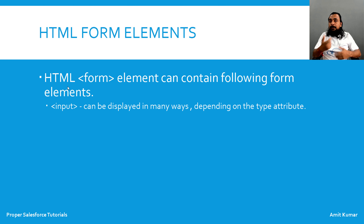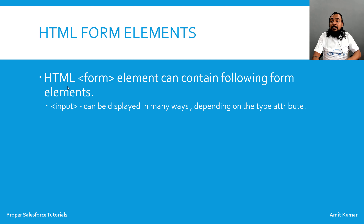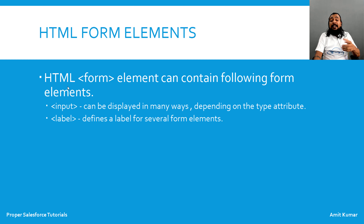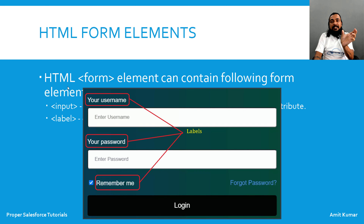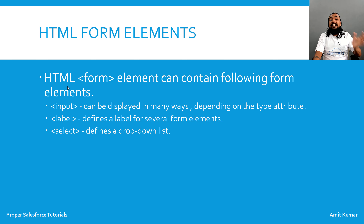The input element can be used in many different ways, and for what specific purpose we are using it, we specify with the help of the type attribute. Whatever value you specify to the type attribute, the element changes accordingly. The label element defines a label for a specific form element — for example, the text 'Username' written in front of a text field, or 'Password' in front of a password field — that text is nothing but a label.